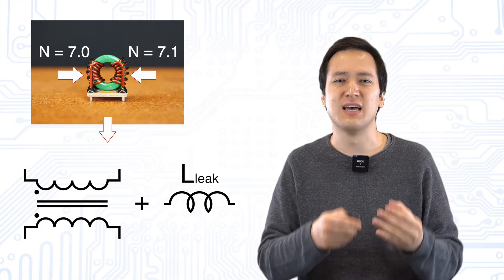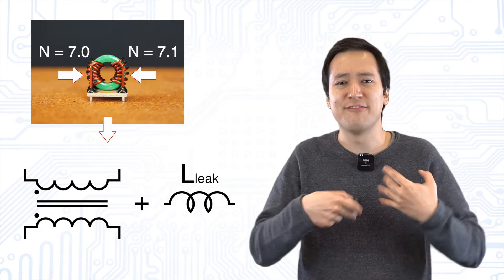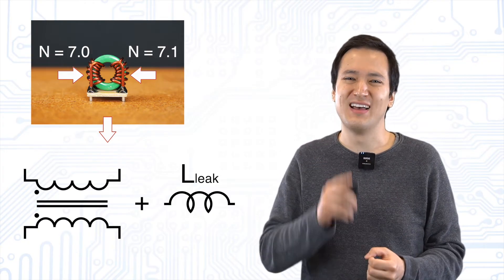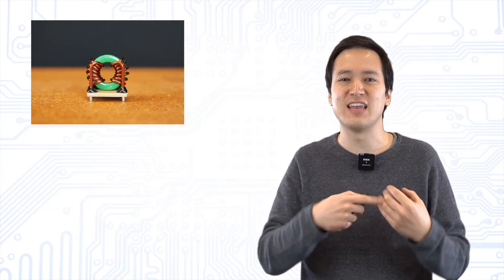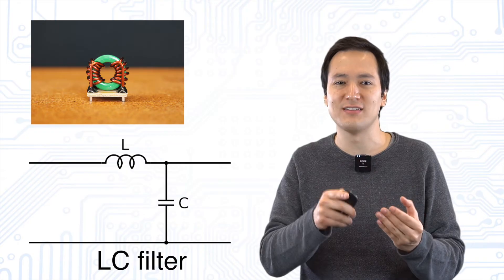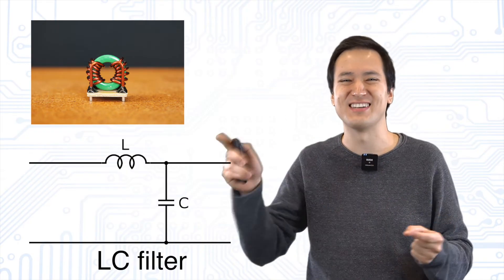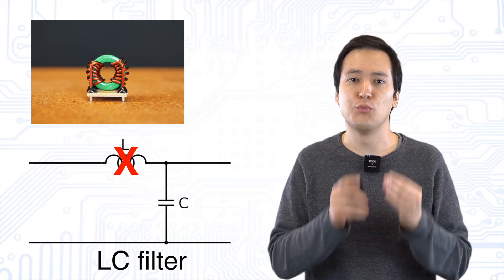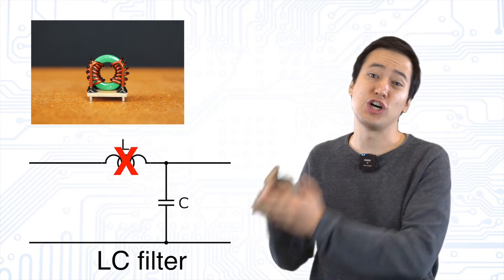We don't want to call this a parasitic element because in fact a small leakage inductance is even desirable. This leakage inductance is then often used in our LC filter to filter differential mode noise. In this way we must not solder an extra filter coil which saves space and costs.